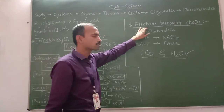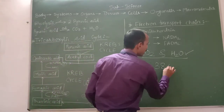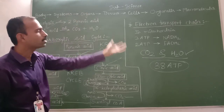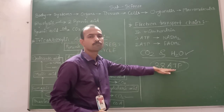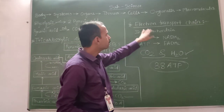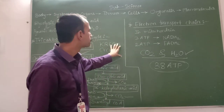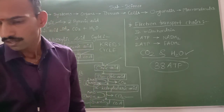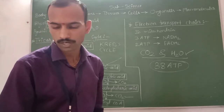Complete aerobic respiration — which includes glycolysis, the tricarboxylic acid cycle, and the electron transport system — produces a total of 38 ATP molecules, which provide energy to our body. These 38 ATP molecules are formed in the mitochondria, and that is why mitochondria is known as the powerhouse of the cell. In the next video we will discuss the energy currency and different food components and how we get energy from food.